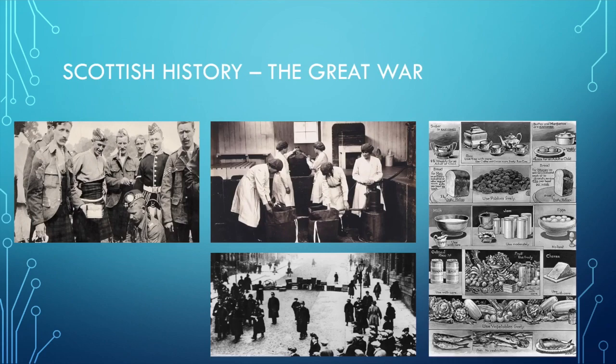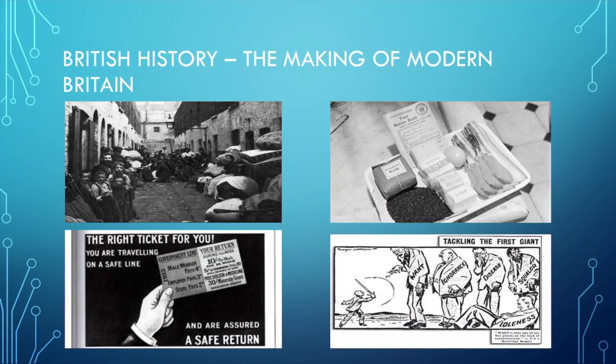The next topic pupils will look at, which will be new to them in S4, is British history. The topic they'll look at is the making of modern Britain, where they will evaluate the growth of the welfare state over the first half of the 20th century. Initially by looking at the causes of 19th century poverty and the reasons why attitudes towards helping the poor changed, then looking at the success and limitations of the liberal reforms, before switching to look at the impact that the Second World War had on the home front, and finally an evaluation of the post-war Labour government's attempts to tackle the five giants of poverty in the years up to 1951.